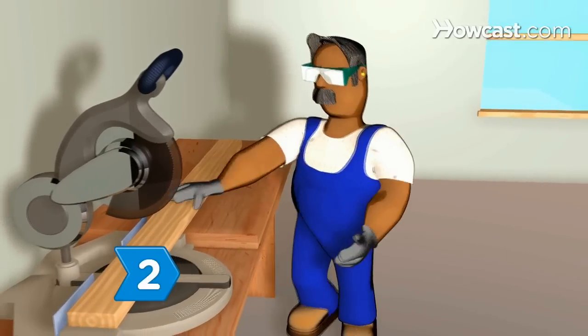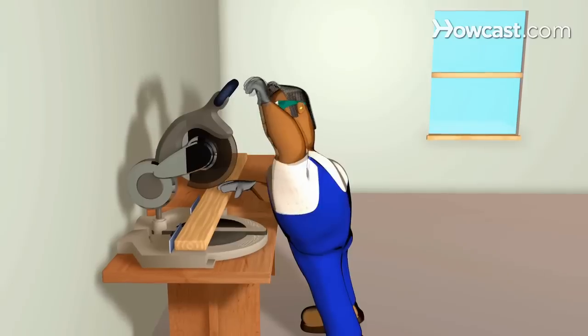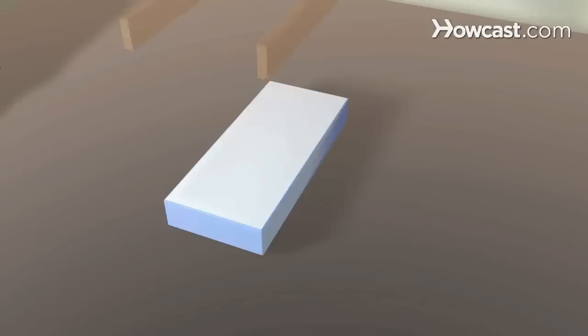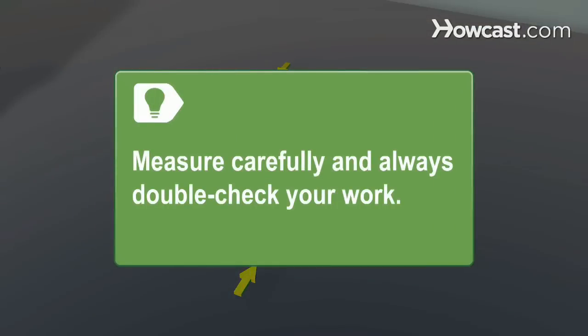Step 2. Use a miter saw to cut the wood, using the mattress measurements as a guide. Build two rectangular boxes, joined together with screws. Screw 2 x 6 inch plywood at the ends to make disassembling easier. Measure carefully and always double-check your work.